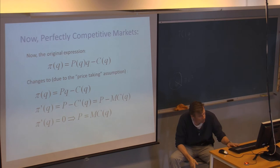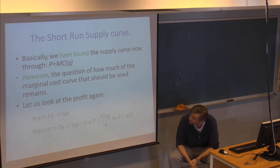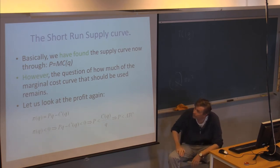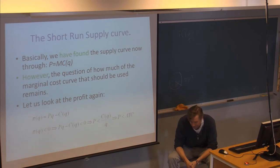Let's move on and look at what's often referred to as the short-run supply curve. We have found the supply curve through P equals MC(Q), or price equals marginal cost. However, the question of how much of the marginal cost curve should be used remains — and this question implicitly states that we shouldn't use all of it.